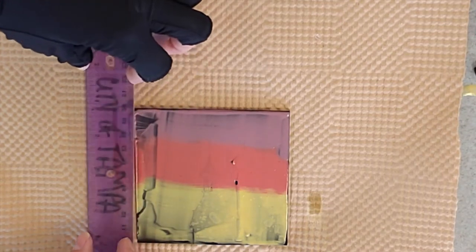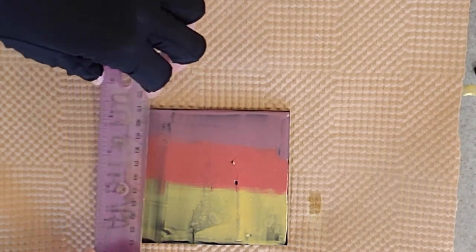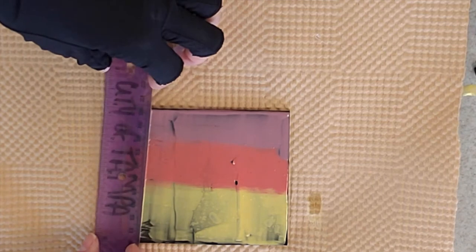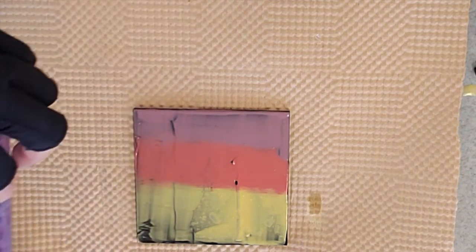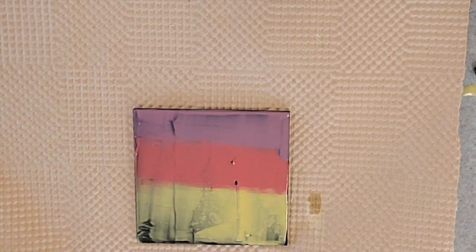Notice I go back and forth a couple times trying to make sure that I'm keeping my colors separated, so I'm not flipping my ruler around and mixing my colors. I'm just trying to reapply and even out the color in their own little fields.